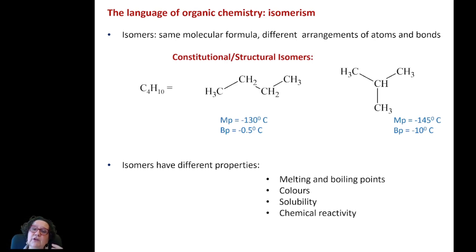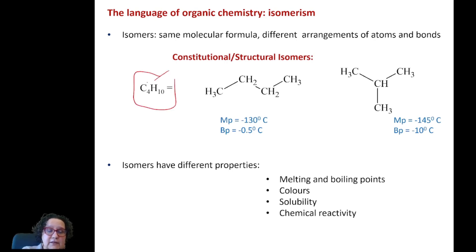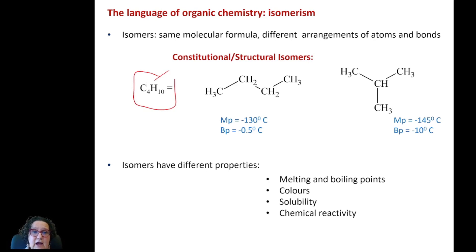The atoms are arranged in a different way. For example, look at this formula C4H10. This is a molecular formula and it tells me that I have 4 carbons and 10 hydrogens.